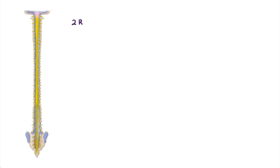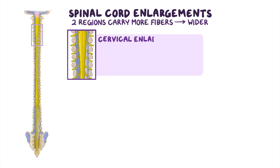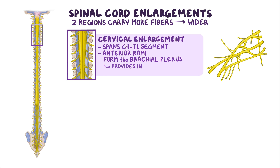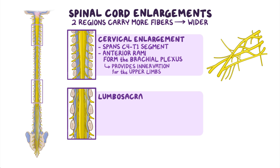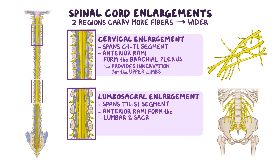Not all regions of the spinal cord are the same size. There are two regions that carry more fibers and are therefore wider, resulting in two spinal cord enlargements. The cervical enlargement spans the C4 through T1 segments. The anterior rami of the spinal nerves that arise from most of these segments form the brachial plexus, which provides innervation for the upper limbs. The lumbosacral enlargement spans the T11 through S1 segments, and its anterior rami form the lumbar and sacral plexuses, which provide innervation for the lower limbs.